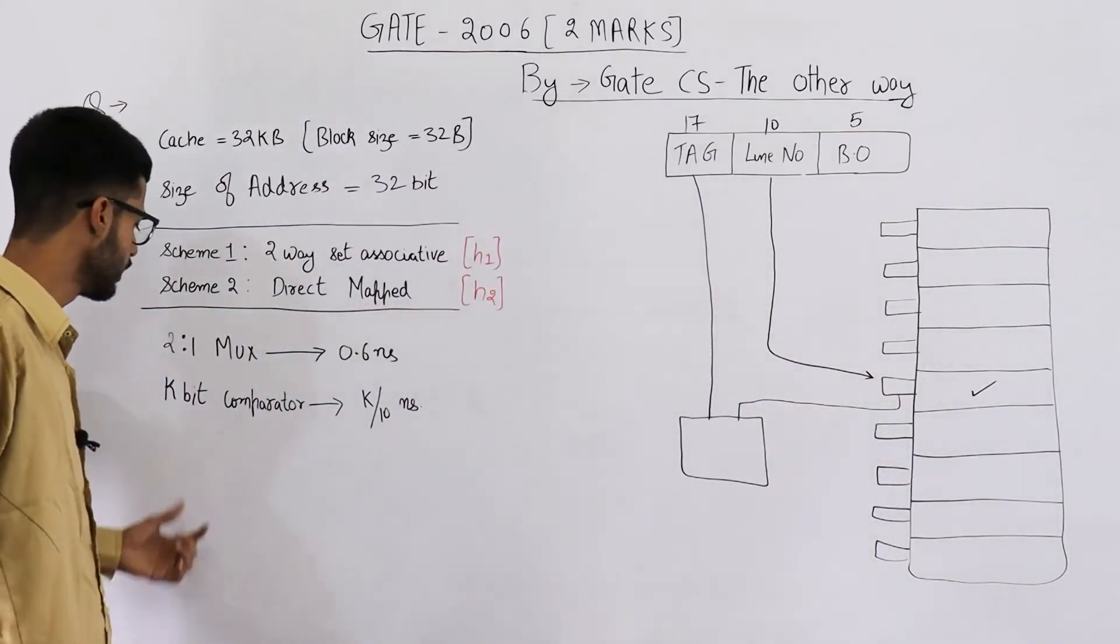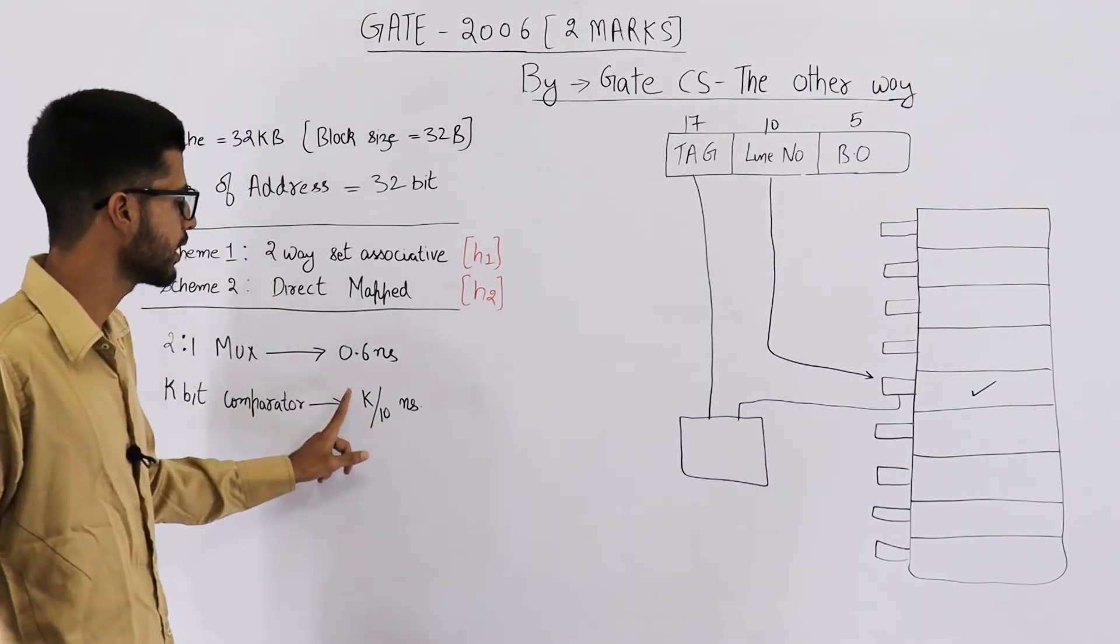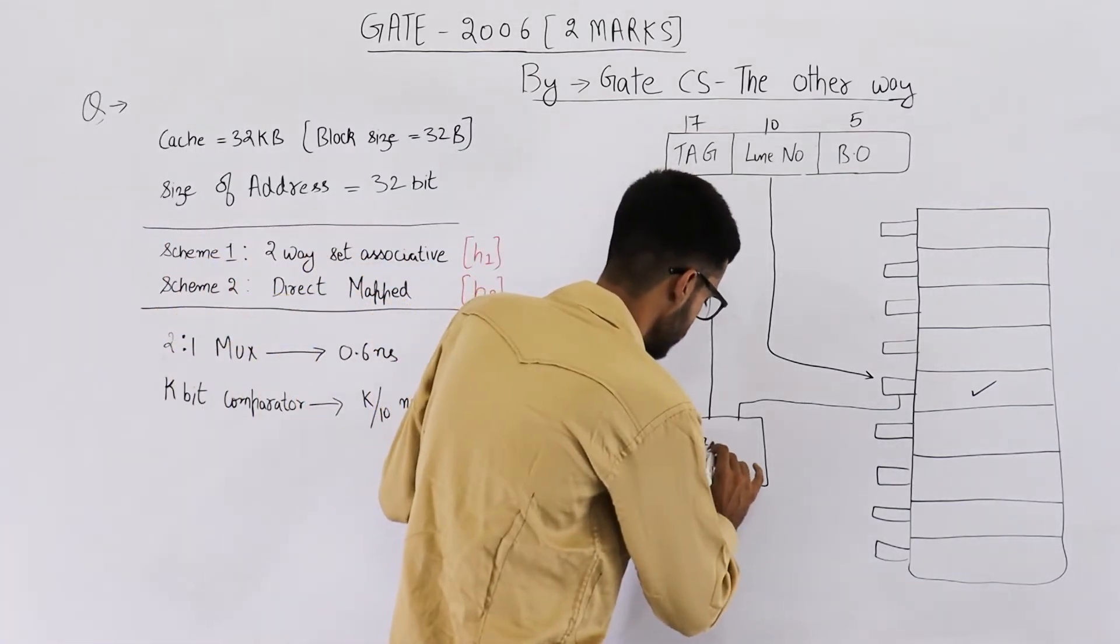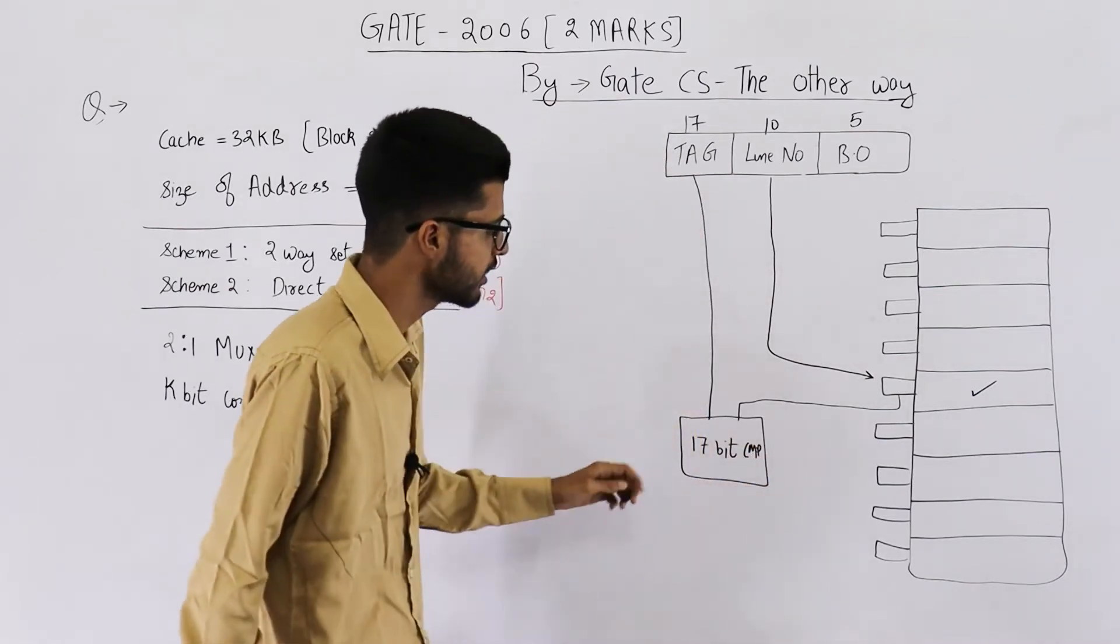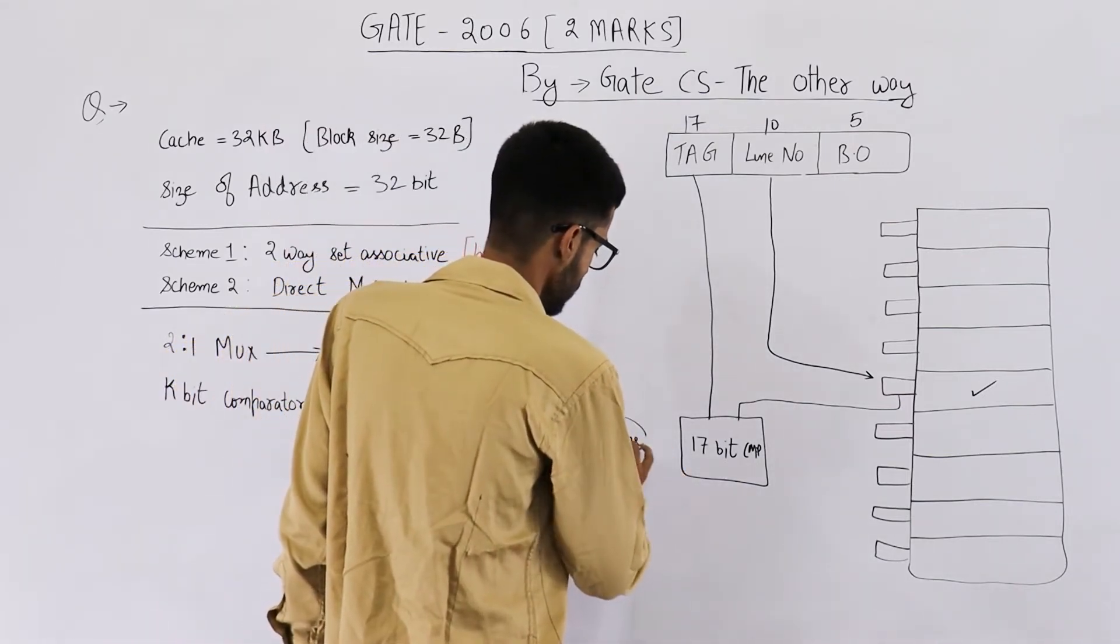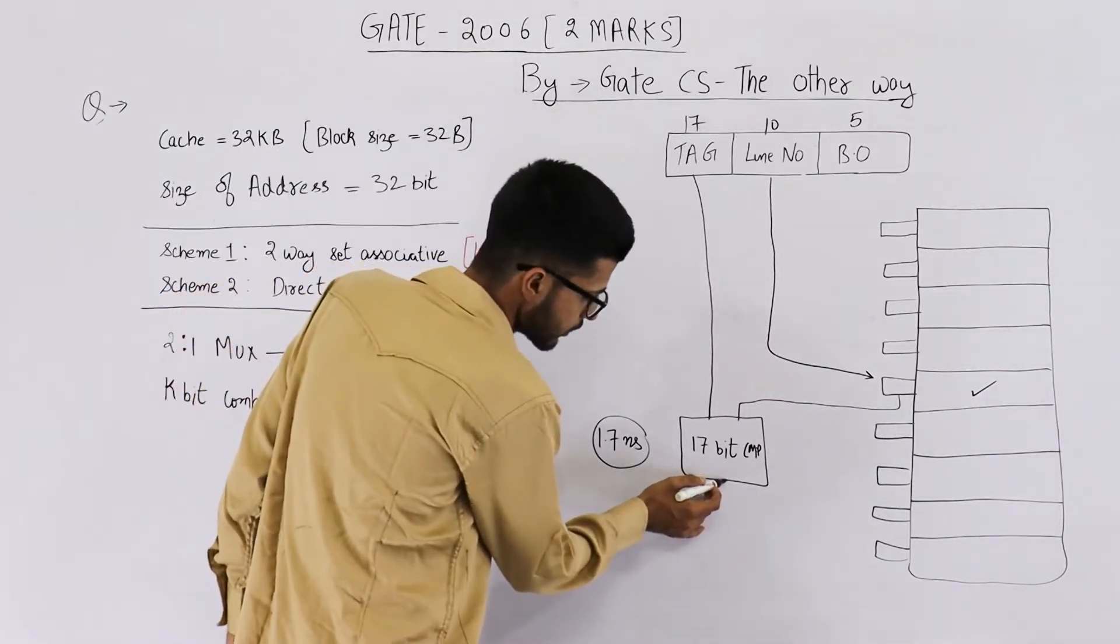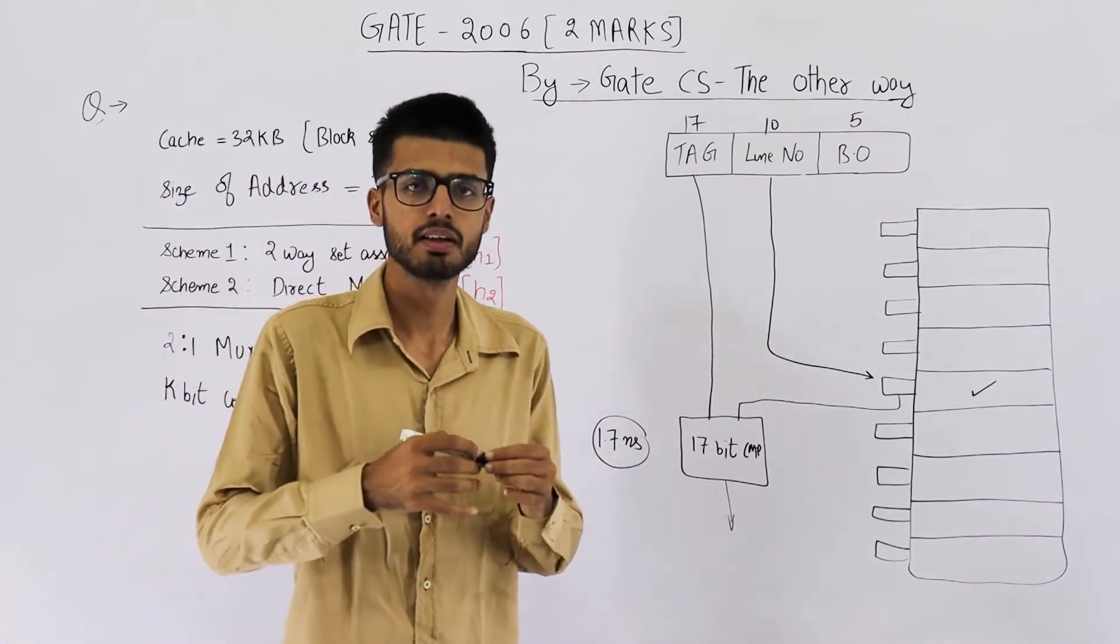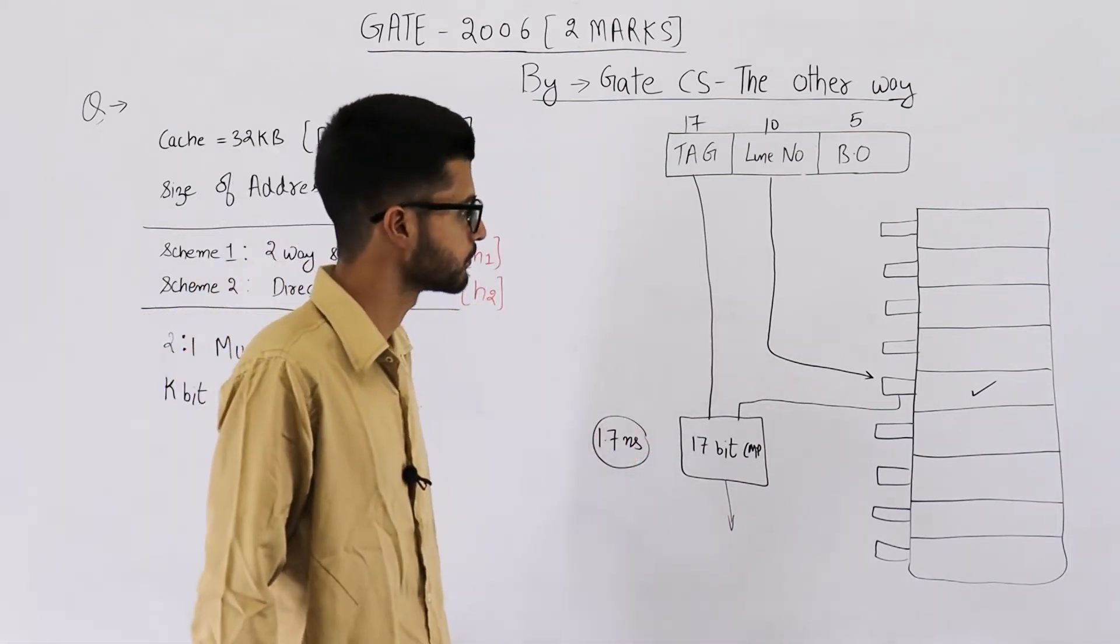That means you need a 17-bit comparator. Its delay will be k by 10. That means 17 by 10, which is 1.7. So 17-bit comparator. And its delay will be 1.7 nanoseconds according to the data given in question. So if it says, yeah, both of them are same, that will be a hit. If it says both of them are different, in that case, this will be a miss.